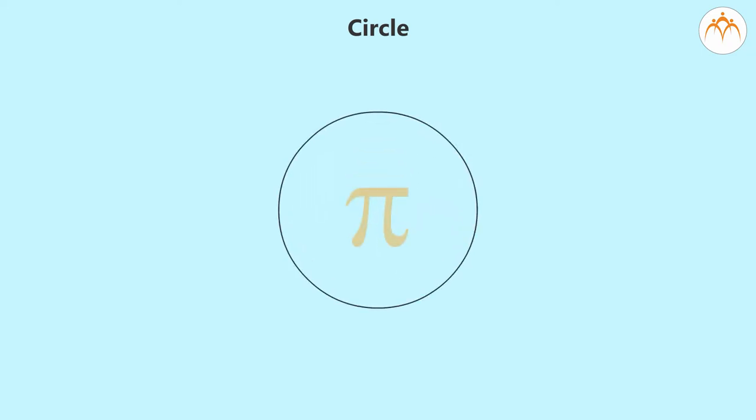What do we mean by a circle? Circle means all points on the paper which are at a fixed distance from a certain point.